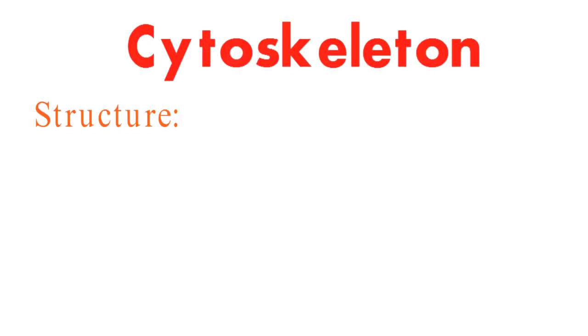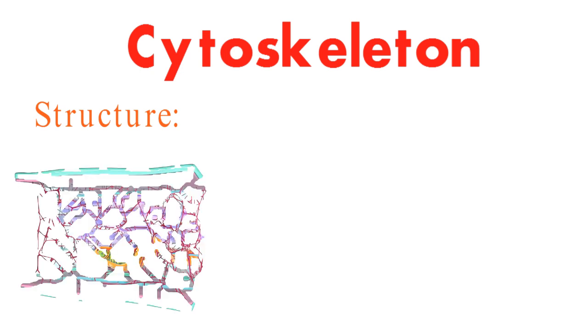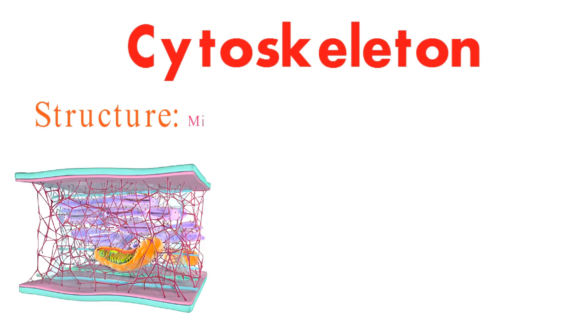The cytoskeleton is made up of three main types of filaments: microtubules, actin filaments, and intermediate filaments.